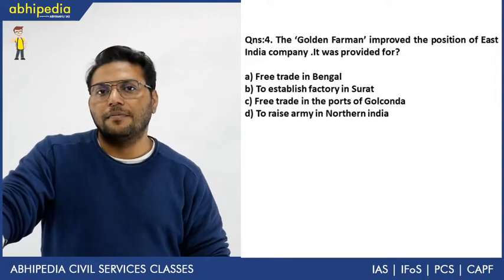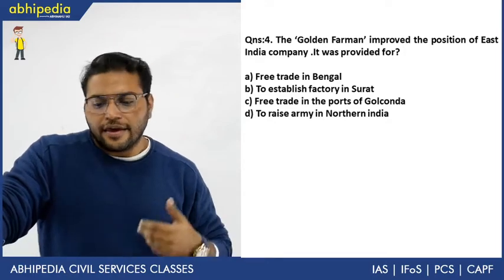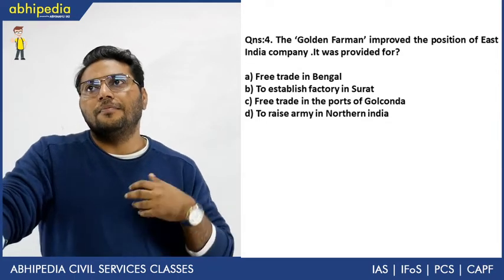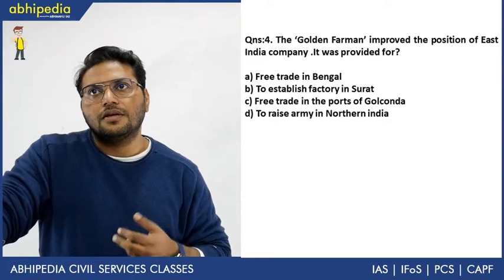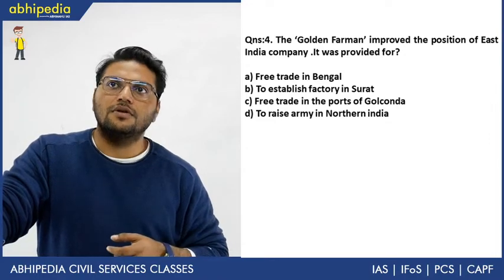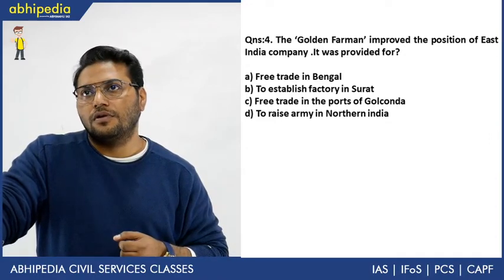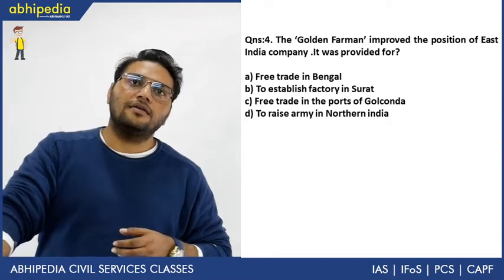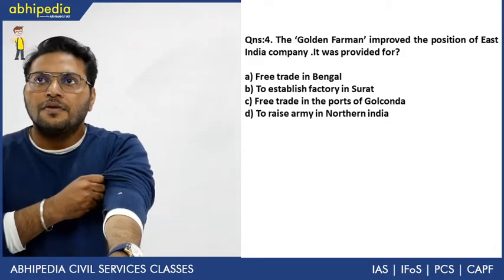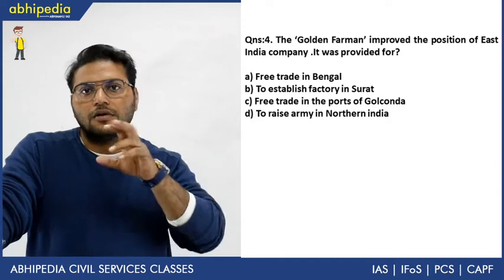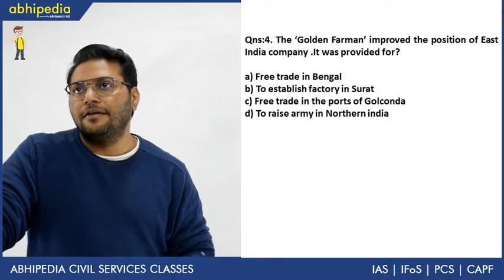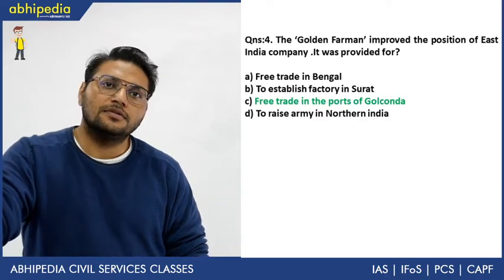Fourth question: the Golden Farman, issued around 1632, improved the position of the East India Company. What did it provide for? Options: free trade in Bengal, establish a factory in Surat, free trade in ports of Golconda, raise an army in Northern India. The answer is free trade in ports of Golconda — the Sultan of Golconda issued this Golden Farman. Answer is C.